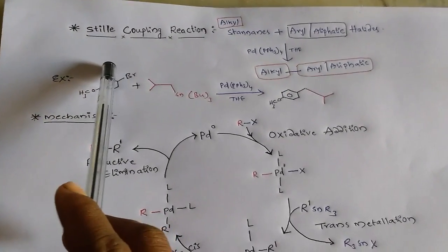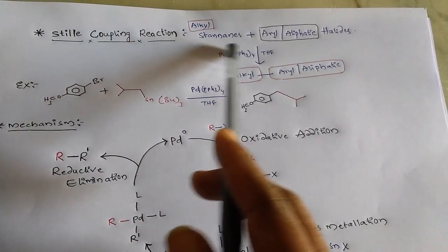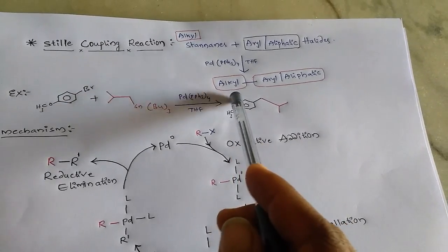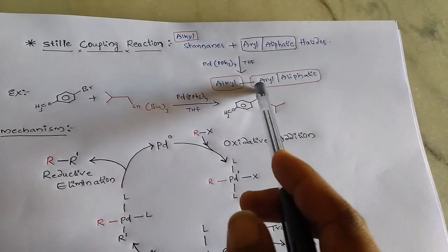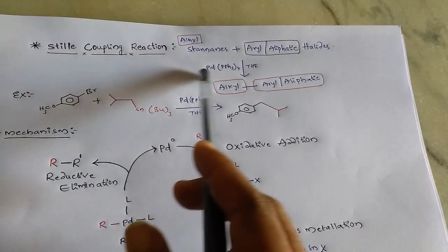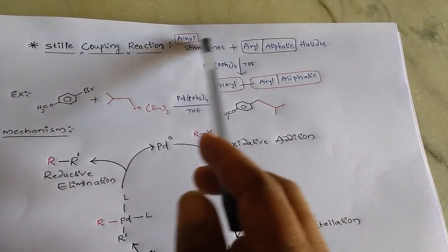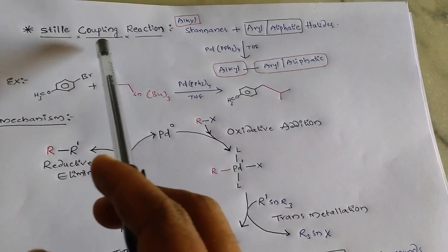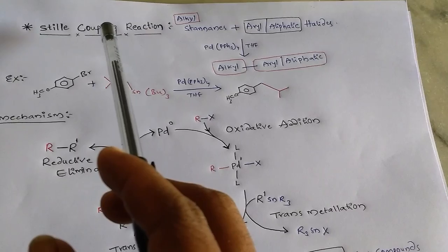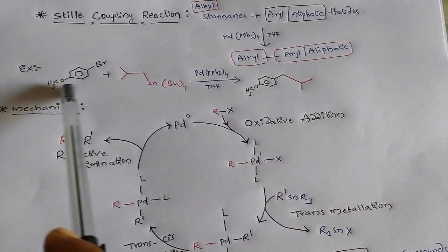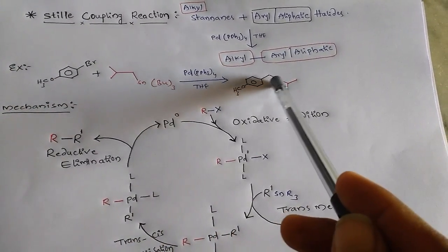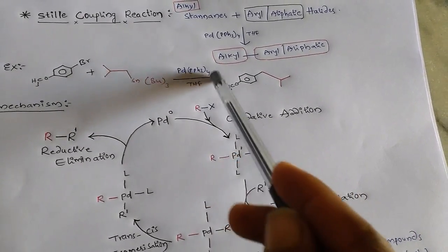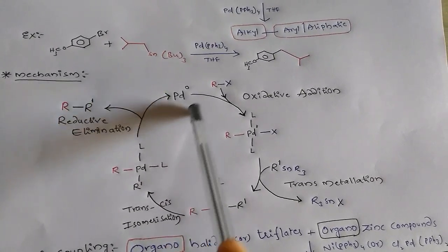The next important coupling is Stille coupling. In Stille coupling reactions, alkyl stannanes react with aryl or aliphatic halides in the presence of a palladium catalyst, giving an alkyl–aryl or aliphatic organic compound with a new bond. The difference between Suzuki coupling and Stille coupling is that in Stille coupling we use stannanes, whereas in Suzuki coupling we use alkyl boranes — remember that. Here is an example showing the new single bond formed between the two moieties in the presence of palladium catalyst.